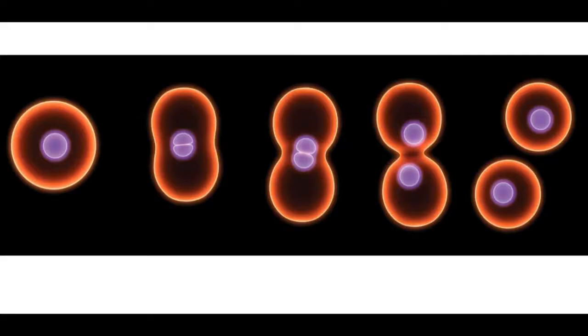You begin life as a single cell formed by the joining of two cells, one cell from your mother and one cell from your father. Your parents' two cells merged and became one joint cell called a fertilized egg.